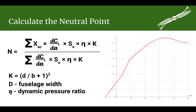K is a correction factor for the fuselage. It's calculated as: take the width of the fuselage divided by the span of the flying surface, add one, then square the result. That gives you a correction factor. When you break it all down, it's pretty simple. You sum all these up for your flying surfaces; on the bottom, it's the same thing except you leave out the reference location. Sum both, divide, and you've got your neutral point.